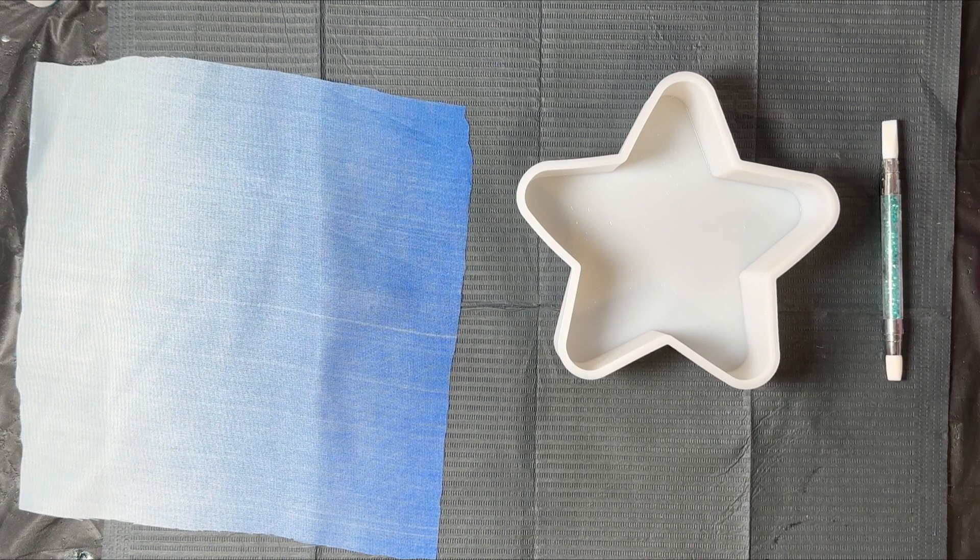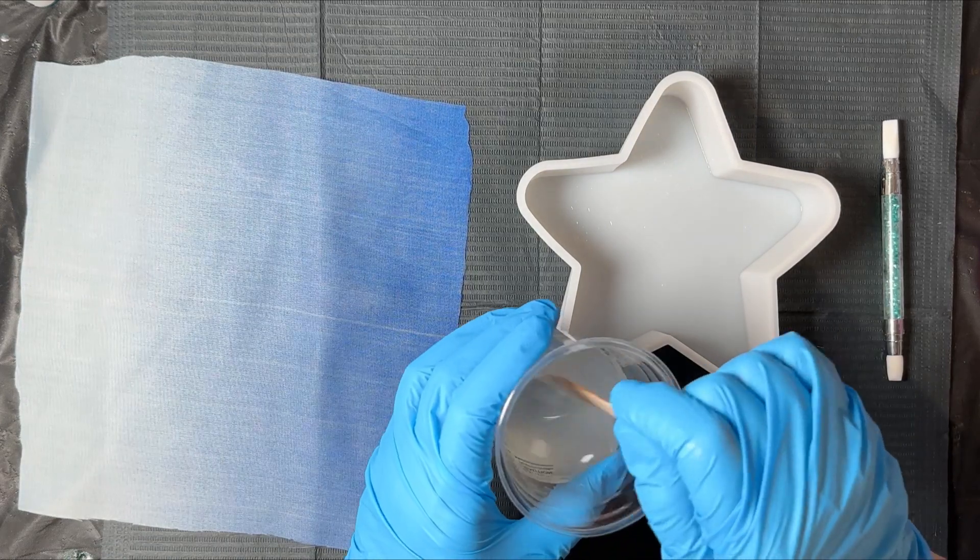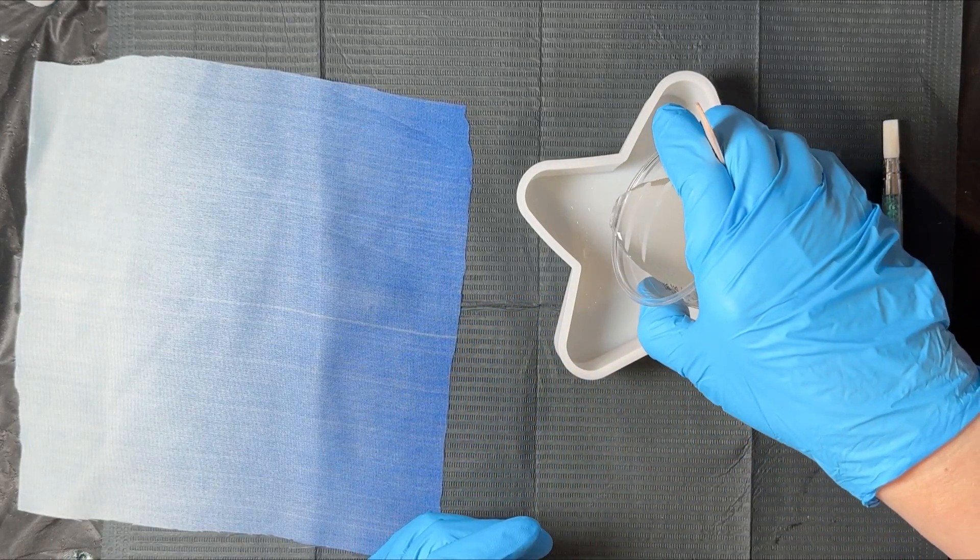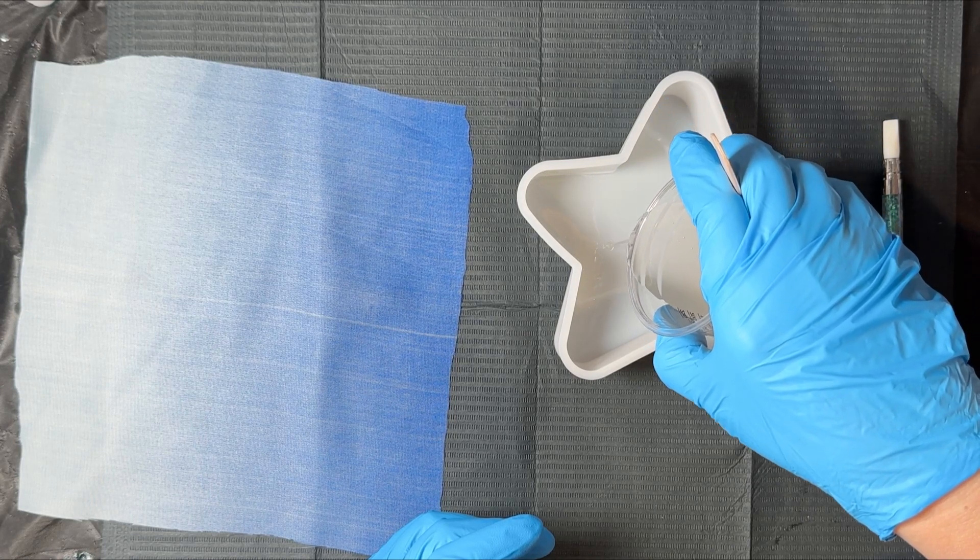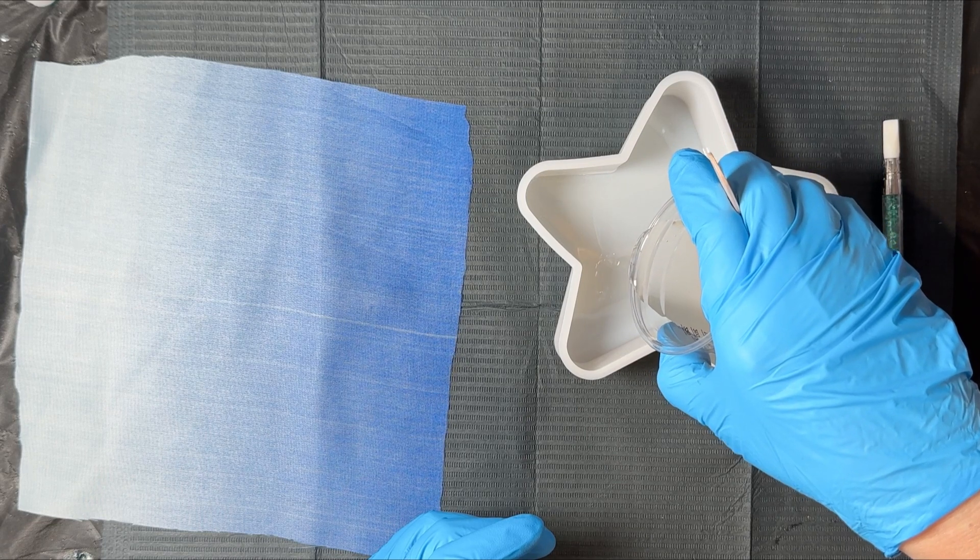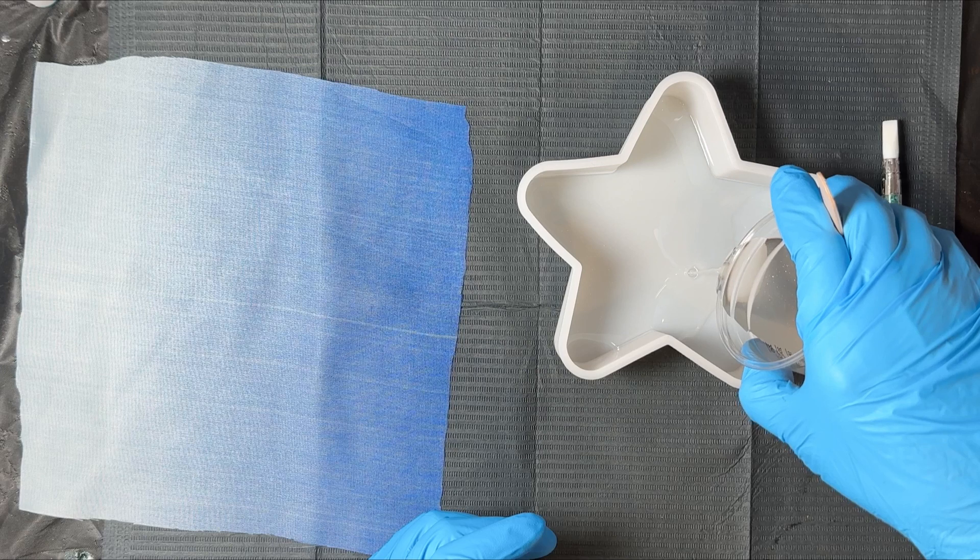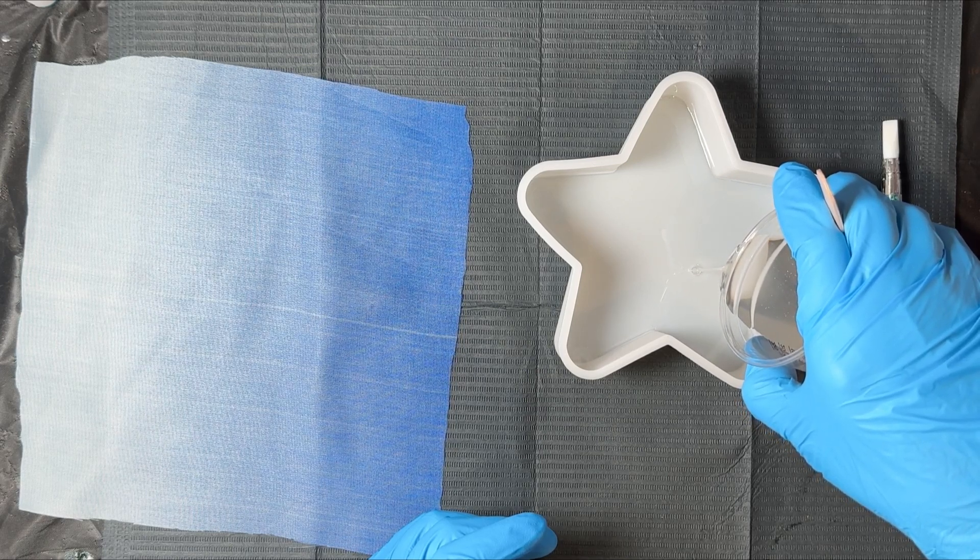So let's get started. First, I mixed up just a small amount of resin, about two ounces, that I'm pouring into the bottom of my mold. I am going to pour it slow and close to the mold just to help offset introducing any additional bubbles into my resin.